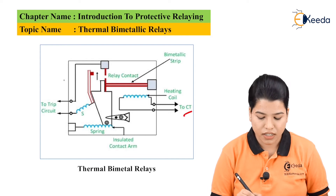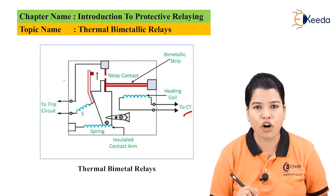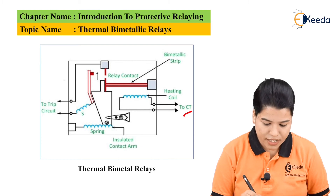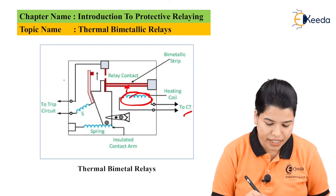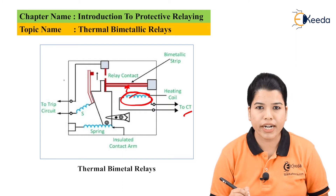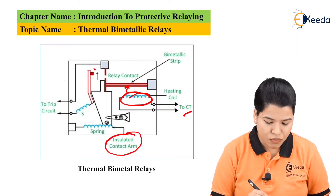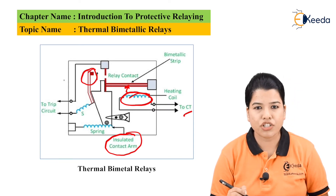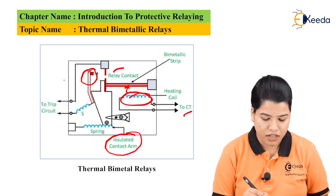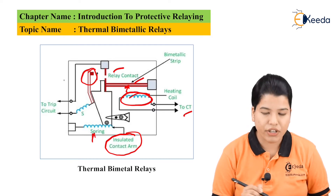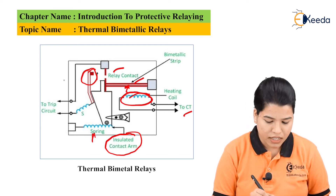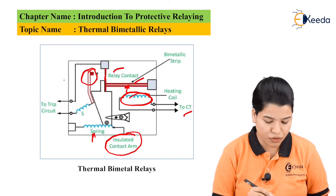Under normal operating conditions, the current sensed by the CT is normal, so no significant heat is produced. When a fault occurs, heavy current causes heat to increase, and this temperature is sensed by the heating coil, which then heats the bimetallic strip. Under normal conditions, the insulated contact arm is held far away from the relay contacts, but when a fault occurs, the heat generated causes bending of the bimetallic strip, releasing the spring's pressure and closing the trip contact of the relay.